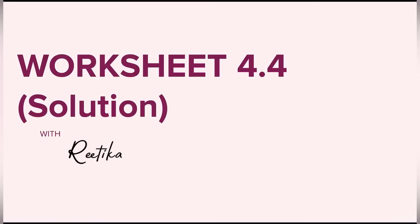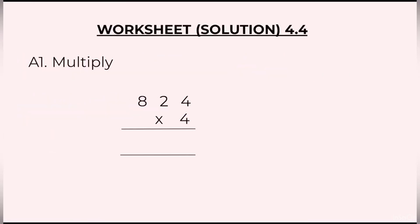Solutions to worksheet 4.4. First one was multiply 824 × 4. We will start by multiplying 4 into 4. That is 16, 1 at the top, 6 at the bottom. Then 4 into 2, 8 plus 1, 9. 4 into 8, 32. So the final answer is 3296.